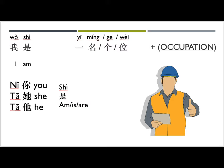Next, we will introduce occupation. The sentence pattern is 我是一名 and then you put the occupation at the end. 我 means 'I,' 是 means 'am/is/are,' 一 means 'one.' 名, 个, and 位 are quantifiers. In Chinese, we use quantifiers after a number when we describe how many of something. To say 'I am a something,' say 我是一名. If introducing someone else, you can use other pronouns.